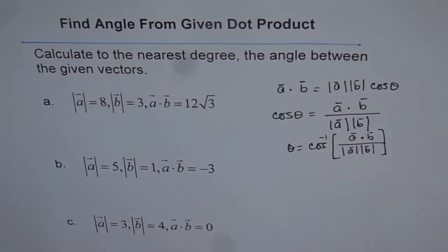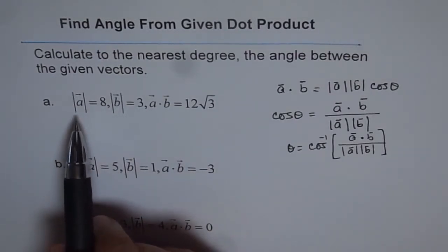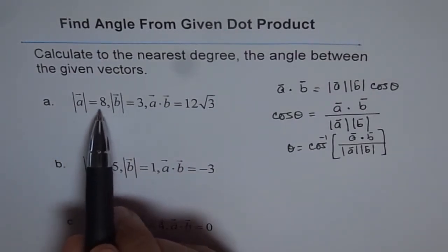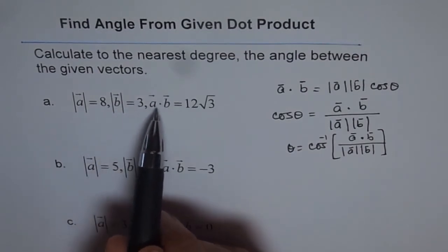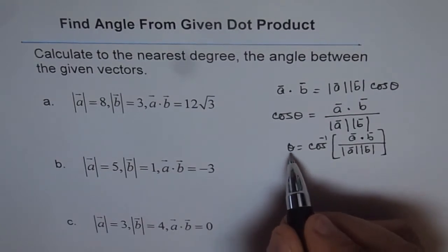So that is how we calculate angle, provided we know the magnitudes of vectors and their dot product. So as an example, let's take up one and solve it. So let's take this one. Here we know magnitude of a is 8, magnitude of b is 3, and the dot product is 12√3. So theta should be how much?